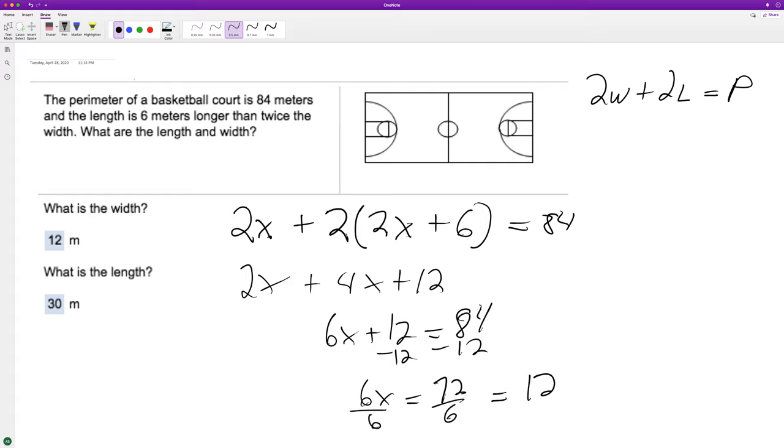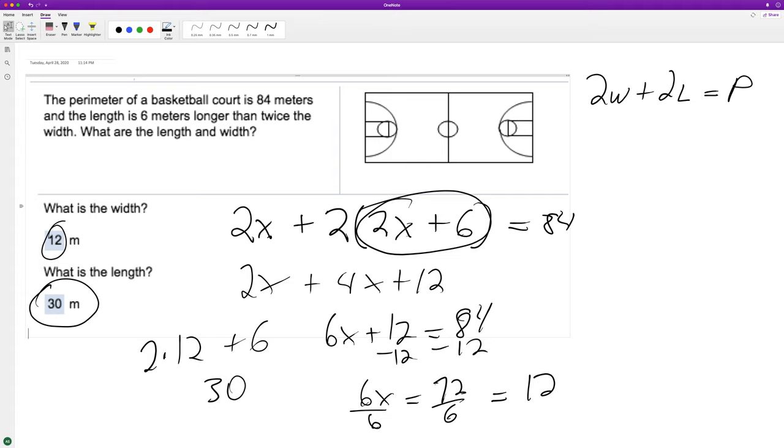It's equal to 12, so that's our width. And then to find the length we do 2 times 12, we just plug into this basically, and then we add 6, gives us 30. And that's it. I hope this helped you out, I appreciate you watching, and you have yourself a great day.